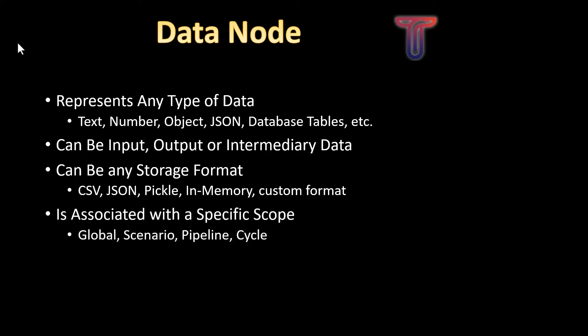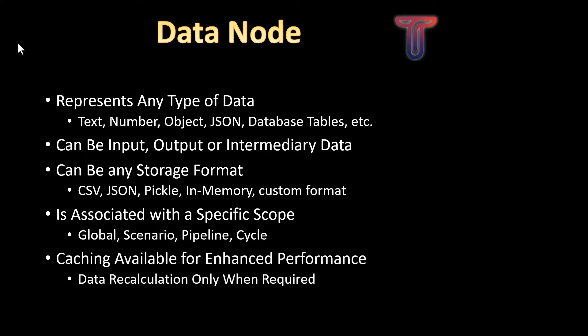Each data node may be associated with a specific scope relative to the application. Scope could be global, scenario, pipeline, or cycle. Caching is available for enhanced performance — data nodes only need to be recalculated at certain times when there are changes that need to be taken into consideration.